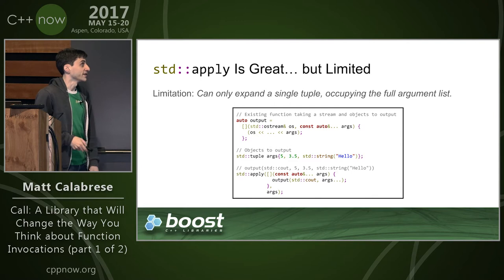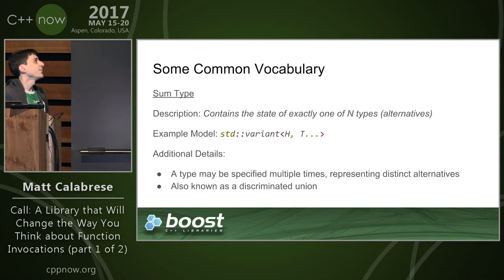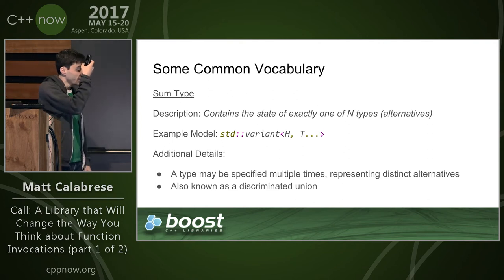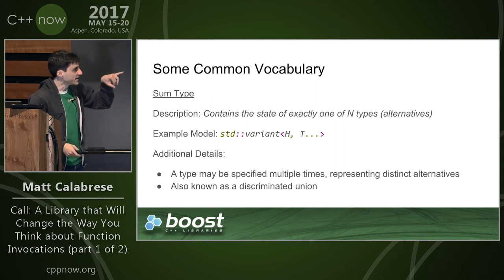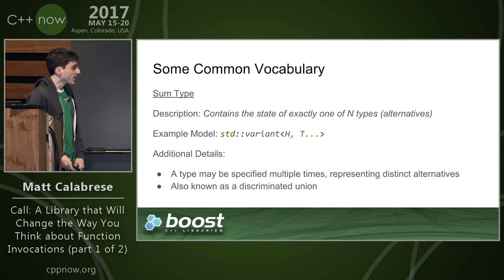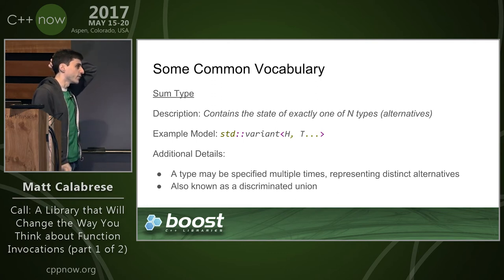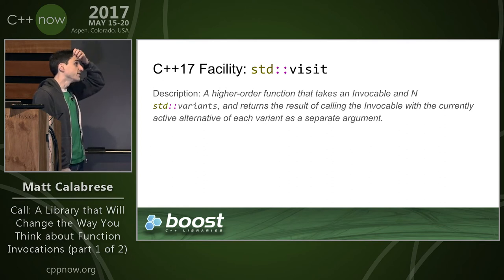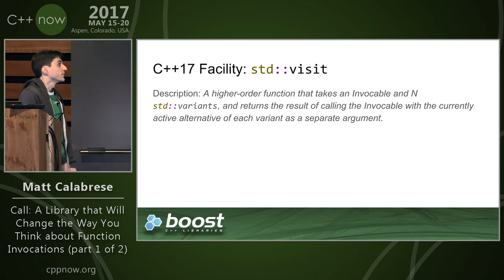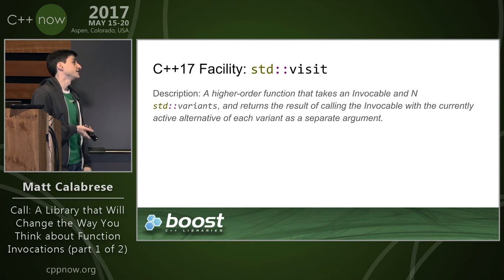Moving away from product types for a second, we'll go to sum types. A sum type is where instead of containing one of each of all the Ts, it contains exactly one of the contained types at any given point in time. std::variant was introduced in C++17 as the way we implement sum types in C++. We've had Boost.Variant since 2003. The facility std::visit is the last part of the title of my original paper and was standardized in C++17.